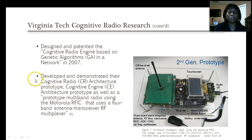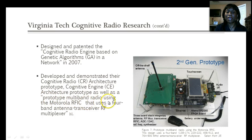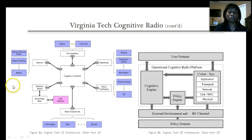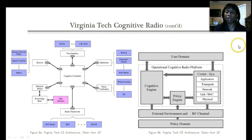One such system is the cognitive radio architecture prototype, the cognitive engine architecture prototype, as well as a prototype multiband radio using the Motorola RFIC. Here we have a picture of what the prototype multiband radio looks like, as well as a graphical depiction of Virginia Tech's cognitive engine architecture and cognitive radio architecture.